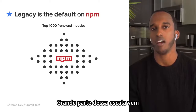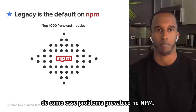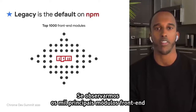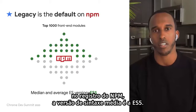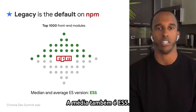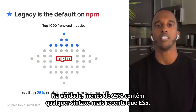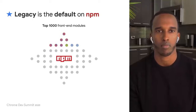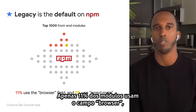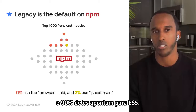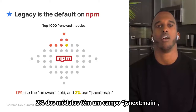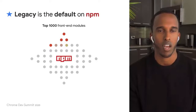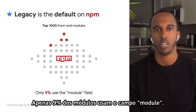A big part of that scale comes from how prevalent this issue is on NPM. If we take a look at the top thousand front-end modules on the NPM registry, the median syntax version is ES5. The average is also ES5. In fact, less than 25% contain any syntax newer than ES5. Only 11% of modules use the browser field, and 90% of these point to ES5. 2% of modules have a JS next main field, and all but one are ES5. And only 9% of modules use the module field.